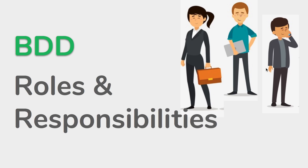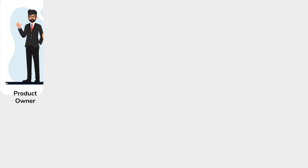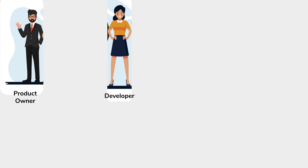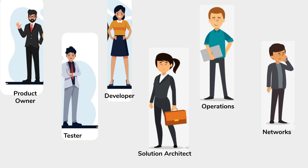Hello and welcome to this session. In this session, we are going to discuss the different roles and responsibilities in a BDD process. BDD, as we have seen in earlier sessions, is all about teams, sharing, and collaboration. In a BDD team, you will find roles like a product owner, a representative from the development team, the testing team, the solution architect, and the operations and networks team. All these roles are very important in a BDD process.